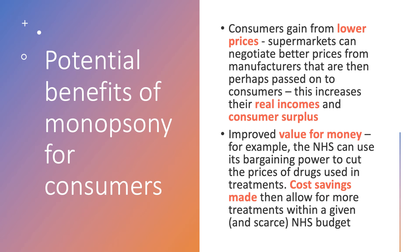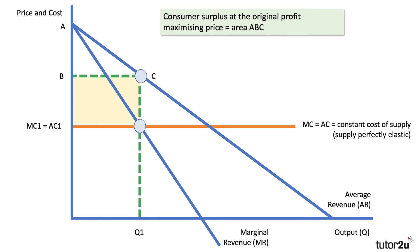In theory, that buying power could lead to better value for money for taxpayers. The NHS could use its bargaining power to cut the prices of the drugs it has to buy, and those cost savings within a given NHS budget might allow more people to be treated. Another good example could be the government buying or tendering out big purchases of materials for construction projects, including social housing. Let's go back to our analysis diagram.